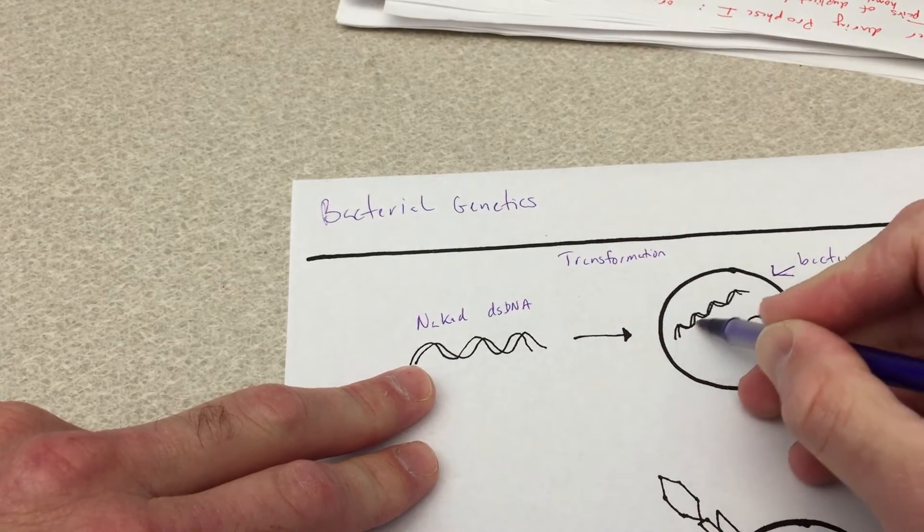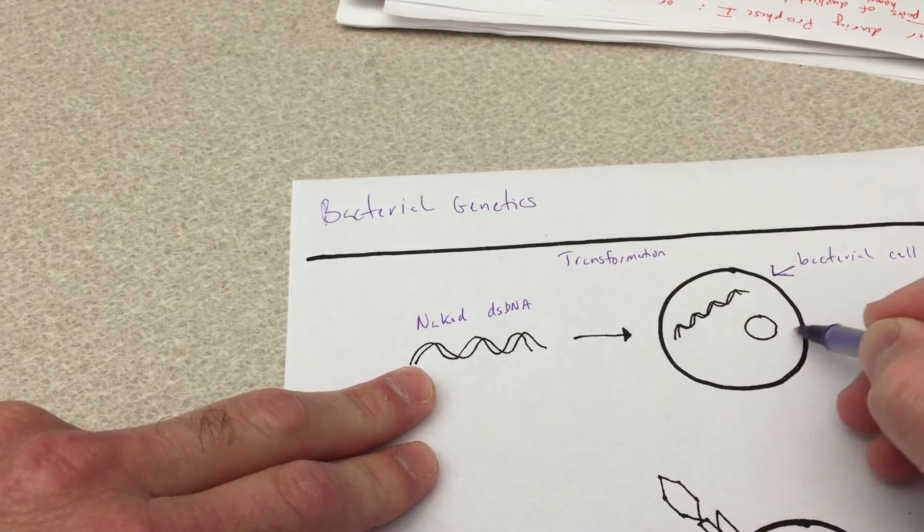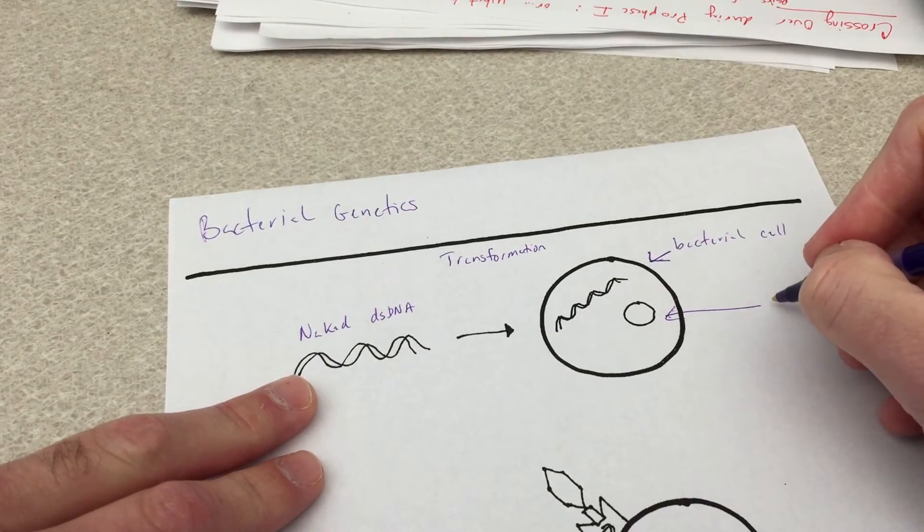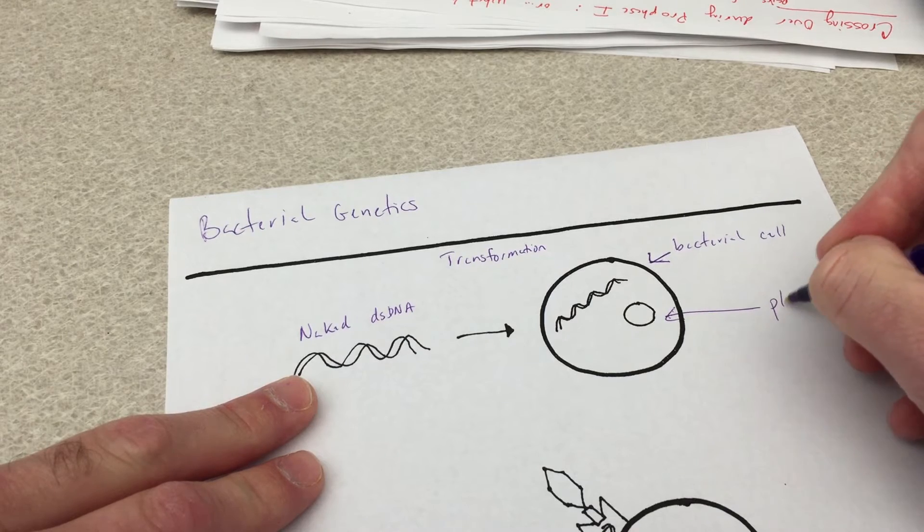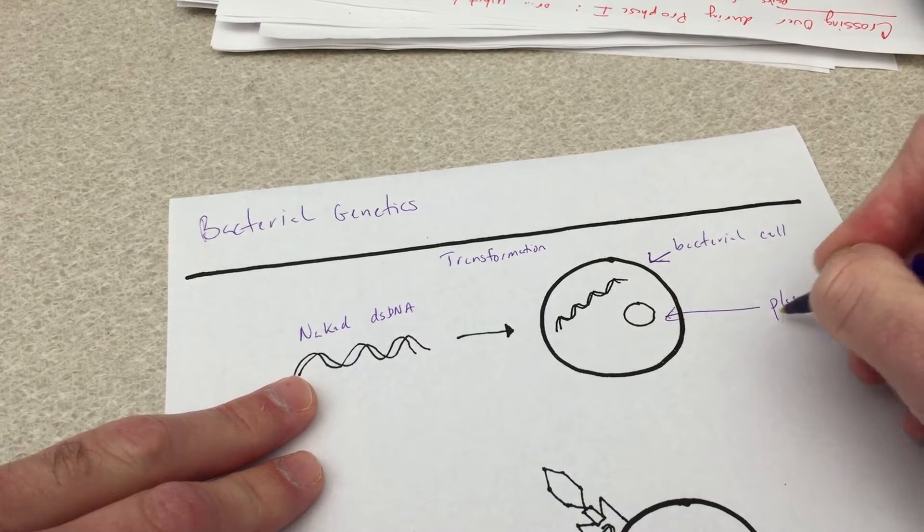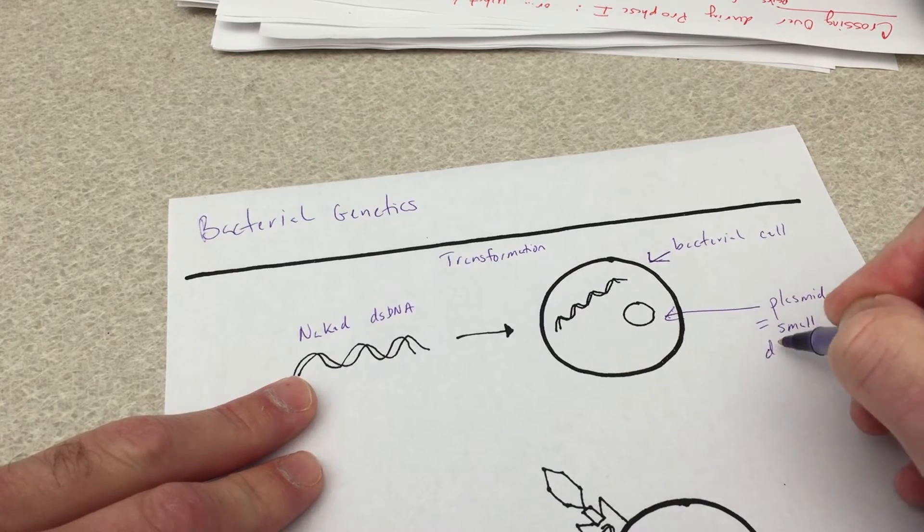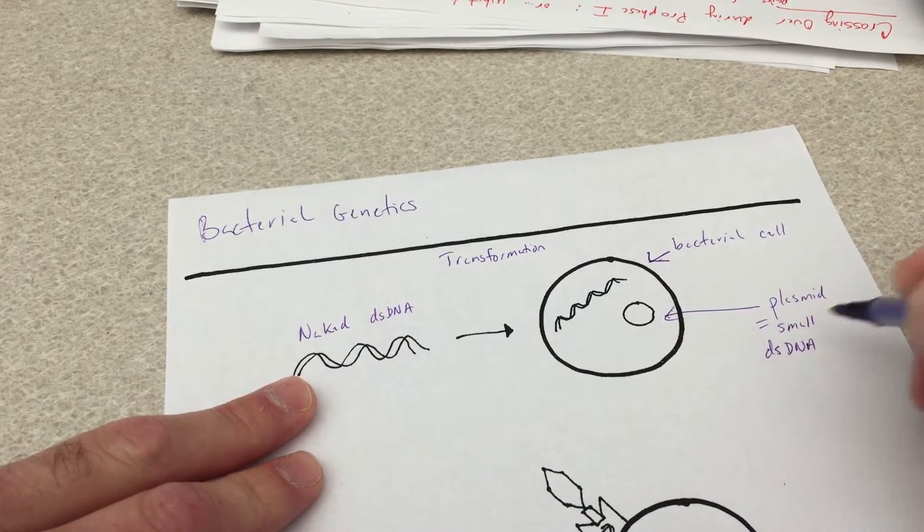So here is the DNA inside of the cell, and this small circular piece of DNA, this is a bacterial plasmid. A plasmid is a small piece of double-stranded DNA.